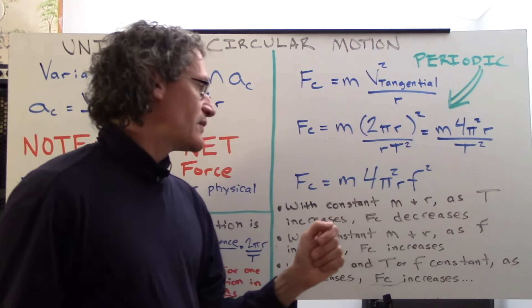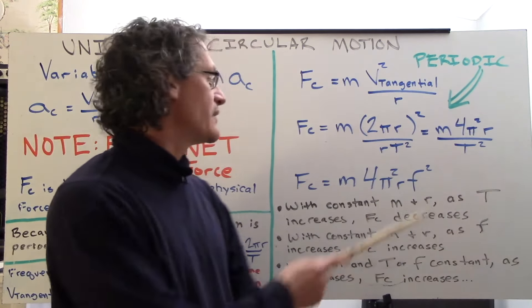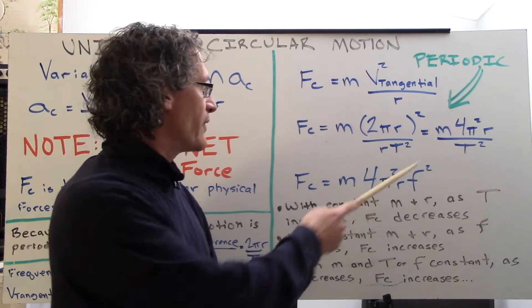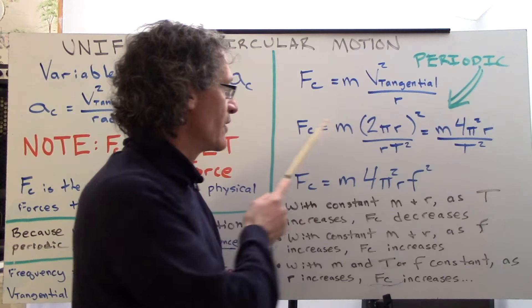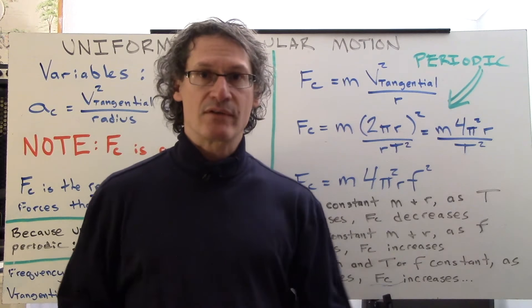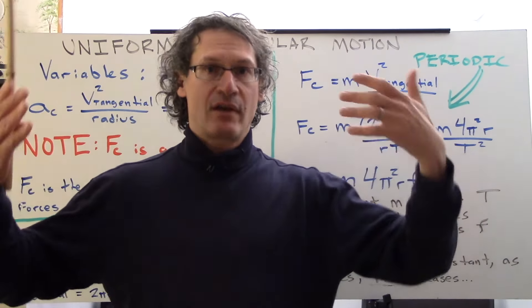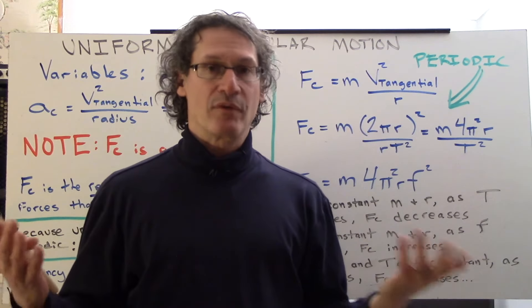With constant mass and radius, as the period T increases, well, that means as this increases, the centripetal force decreases. So longer period means less centripetal force.